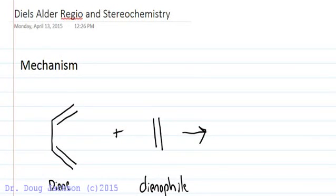When predicting products for the Diels-Alder reaction, you must consider both the regio and stereochemistry of the addition.